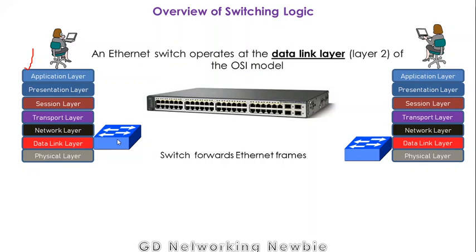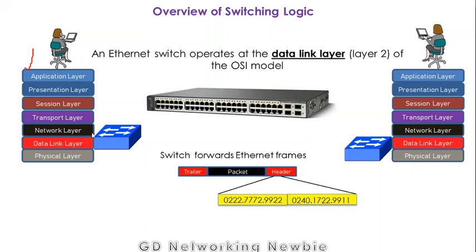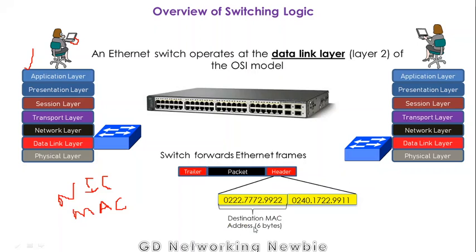The job of the switch is to forward Ethernet frames. A frame holds the data, header, and trailer. There is another video where we discuss in detail what the frame is and its specific fields. In this frame there are three fields: header, packet, and trailer. In the packet field we have our actual data, and in the header part we have the MAC addresses — the media access control addresses. The MAC addresses are the addresses of the network interface card (NIC).